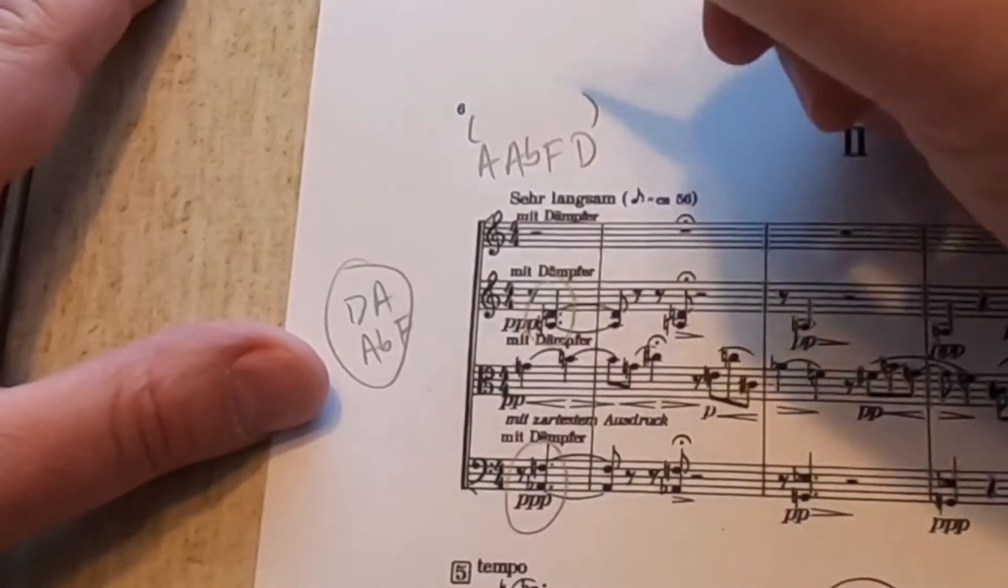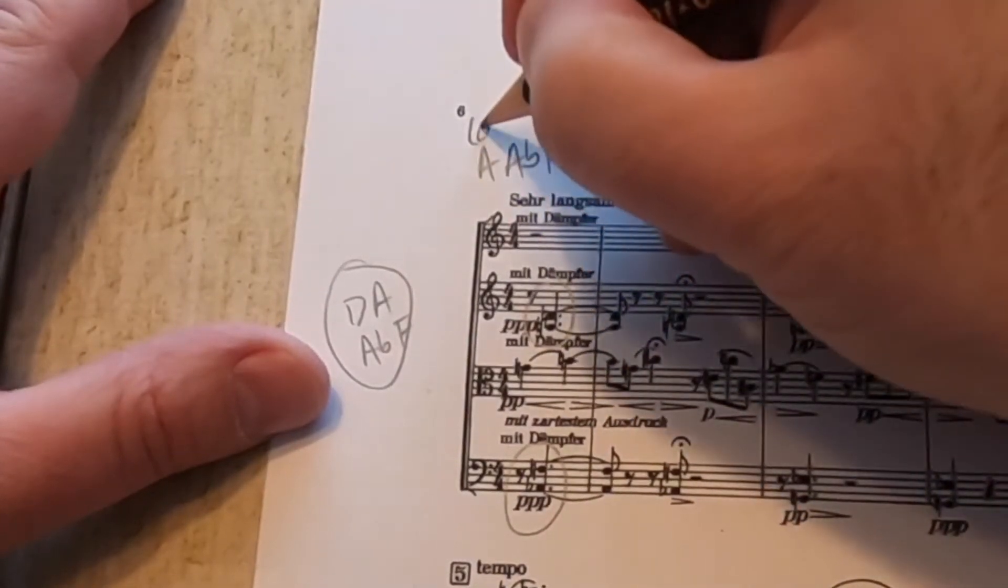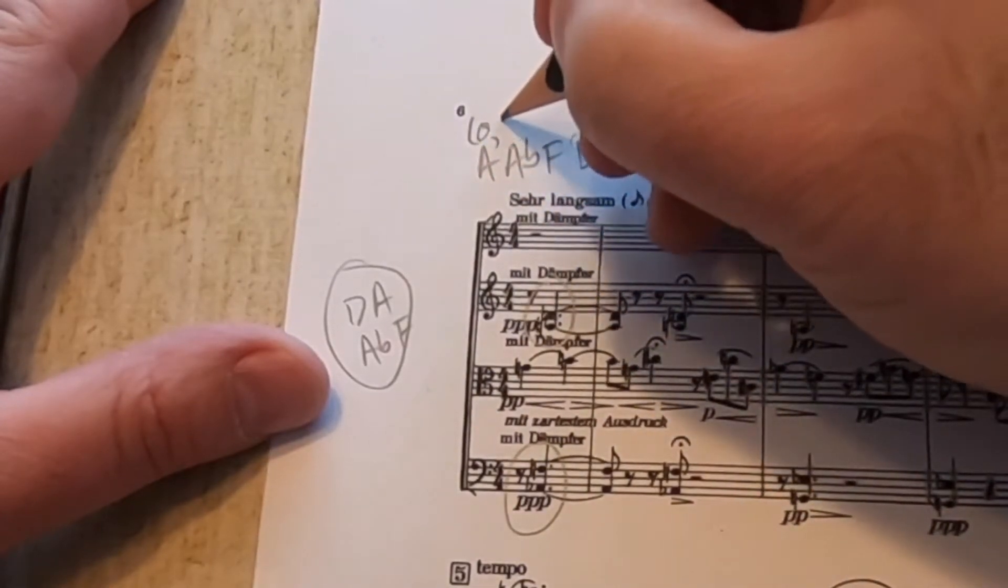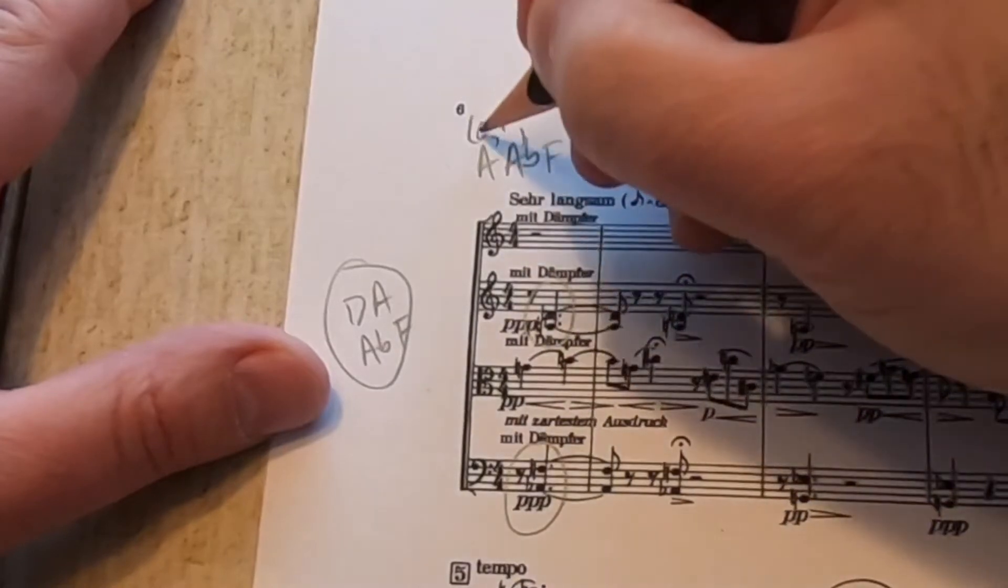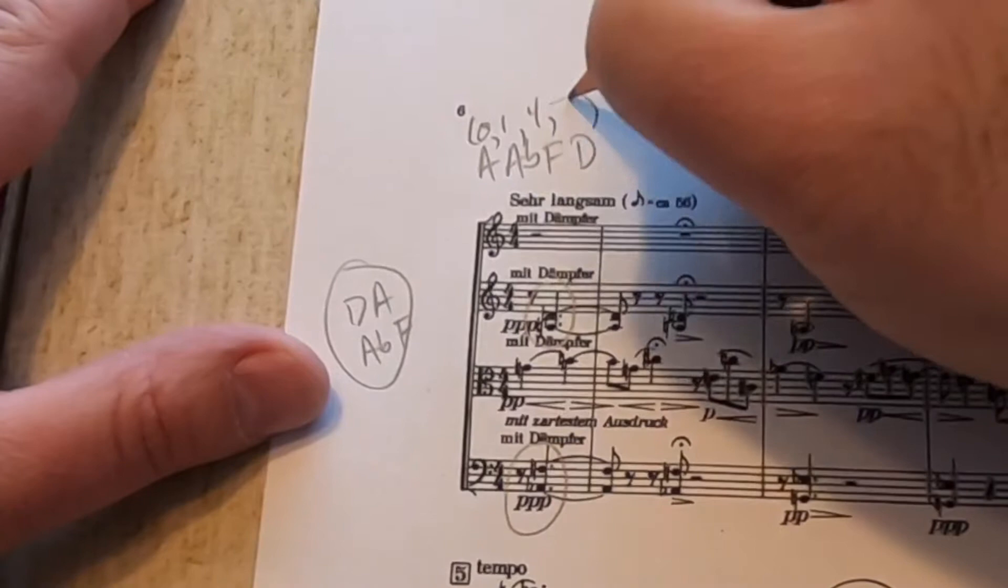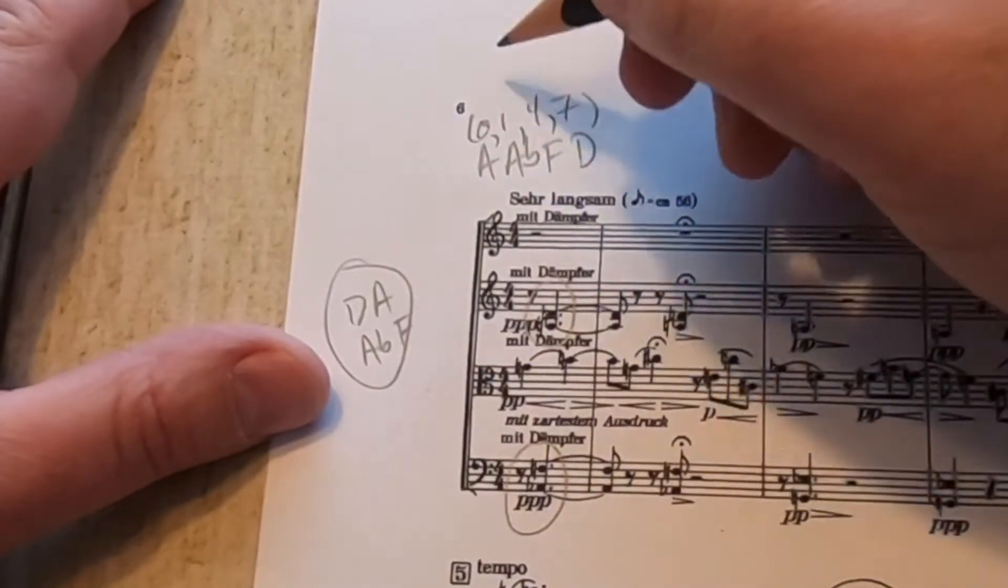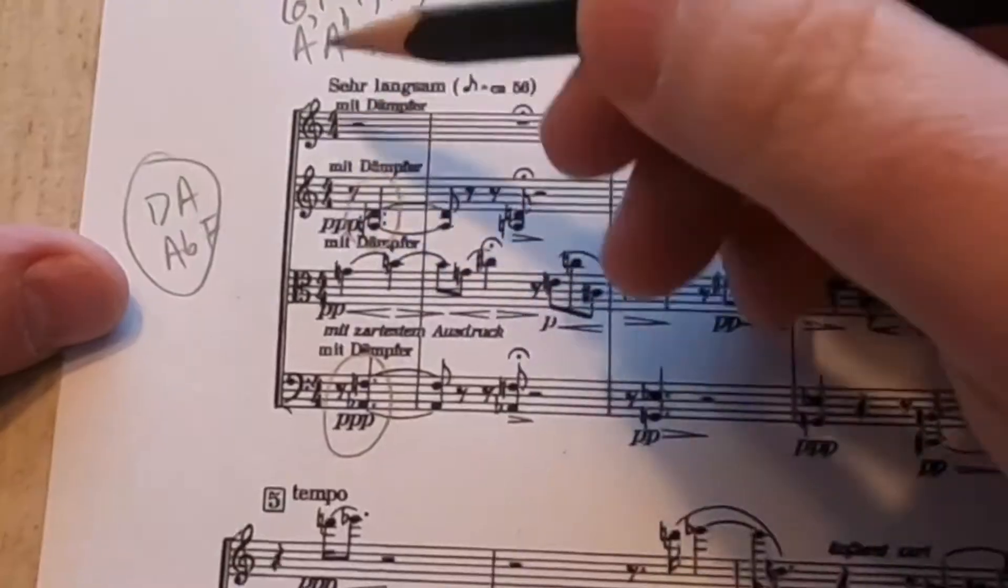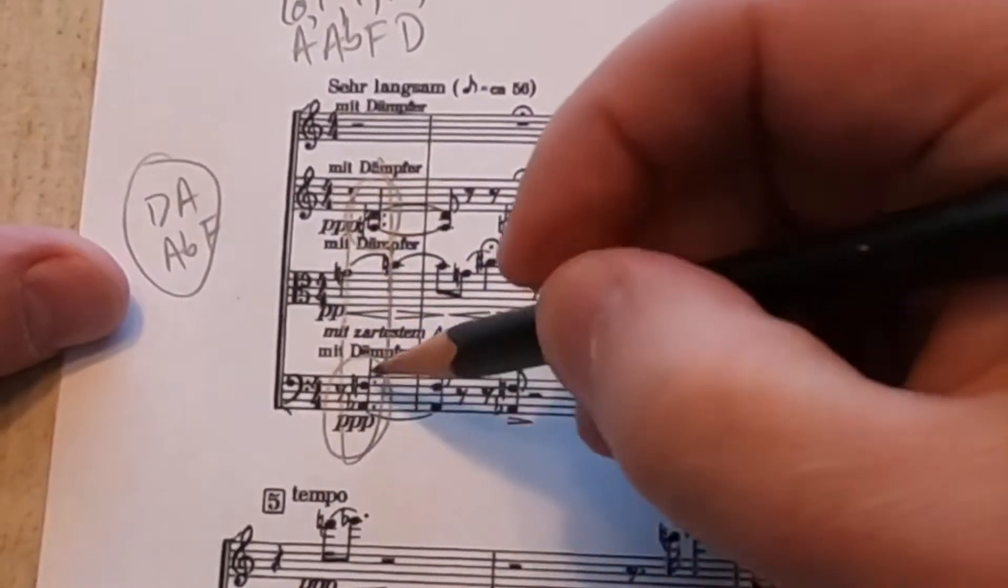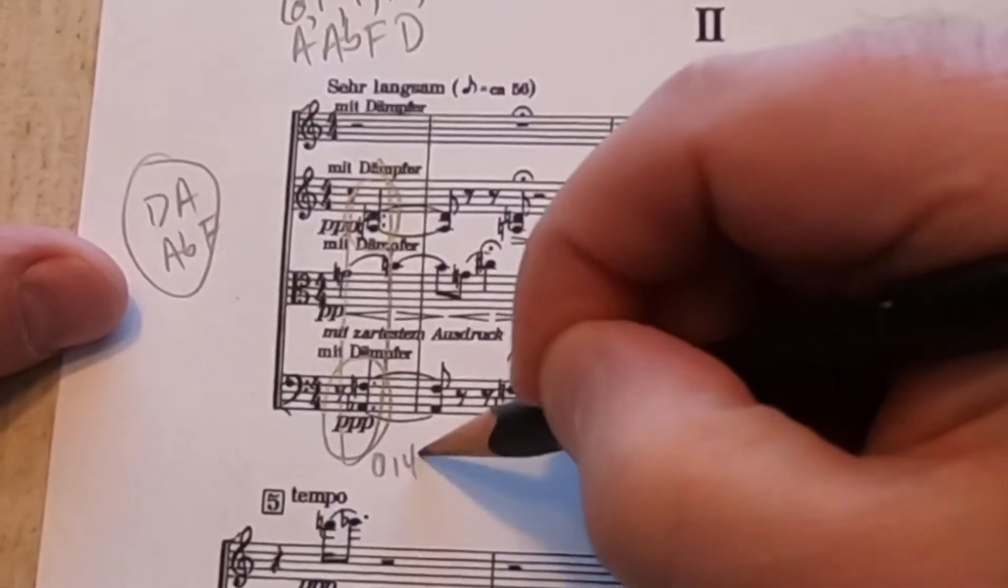Now we have to figure out what the set is for this, so let's call A zero, and now all we need to do is measure the intervals back to A. So A to A flat is one, A to F, four semitones, and A to D is seven semitones. So overall the set is 0, 1, 4, 7. Now we can go back to the sonority, circle the entire thing, and we'll call it 0, 1, 4, 7.